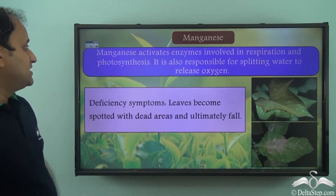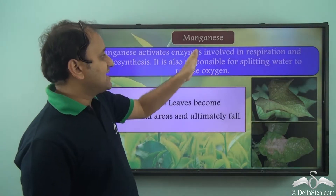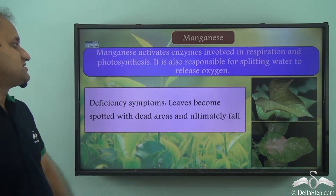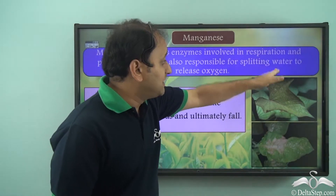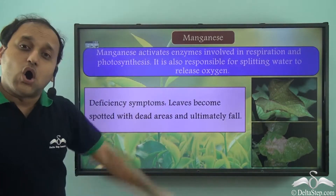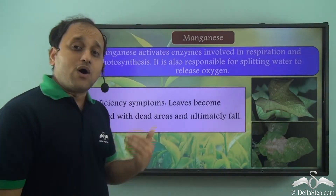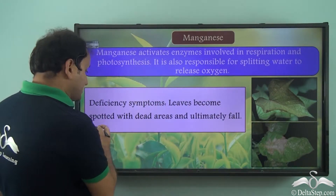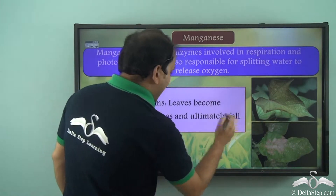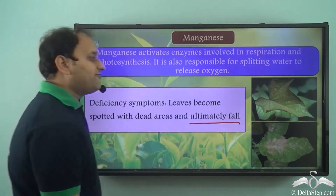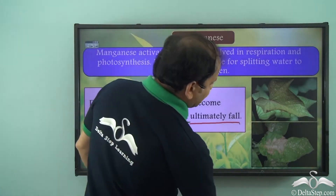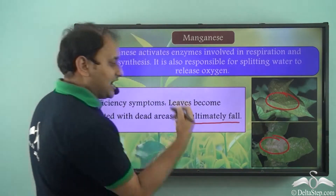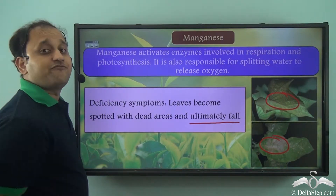Now let's come to manganese. Manganese activates enzymes involved in respiration and photosynthesis. It is also responsible for splitting water to release oxygen. The deficiency symptoms are that leaves become spotted with dead areas and ultimately fall. You can clearly see spotted leaves and dead areas on leaves, and eventually these leaves fall.